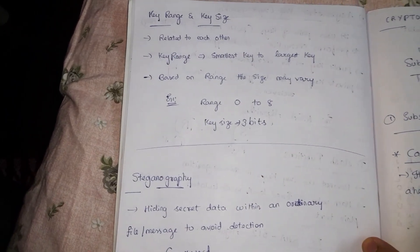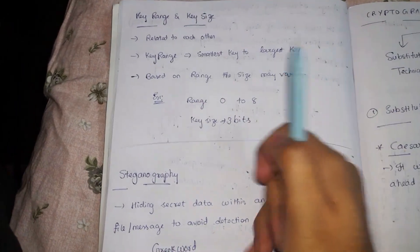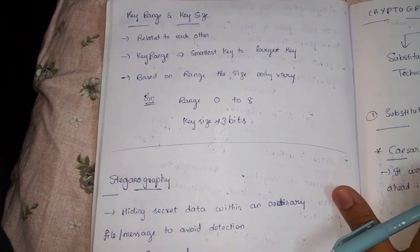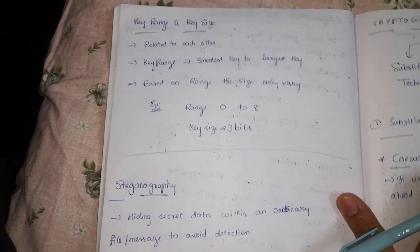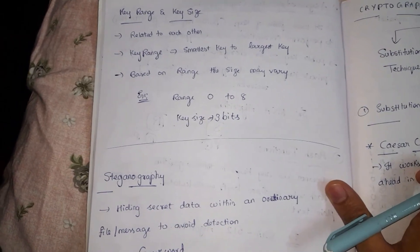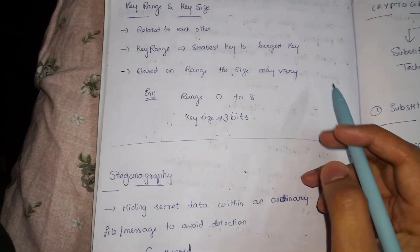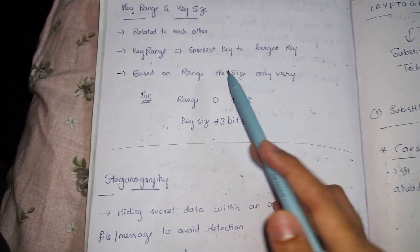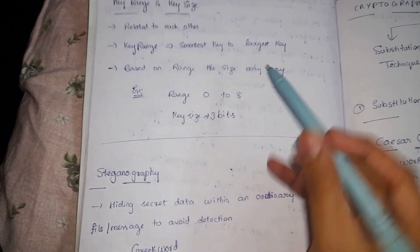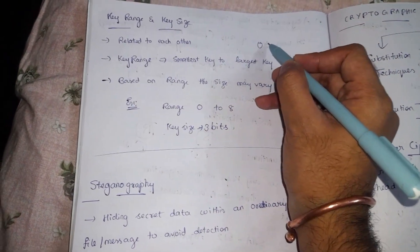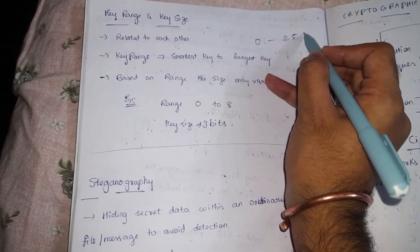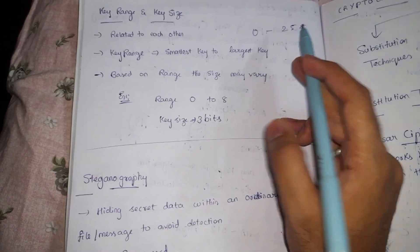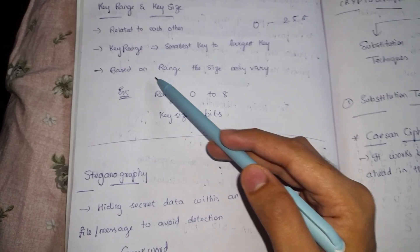There is a concept of key range and key size. In cryptography algorithms we perform encryption and decryption using keys, but how long can the key be and what can be the size of the key? The key range denotes the smallest possible key and the largest possible key. In some cases it can be from as low as zero and as high as 255 or even more, and it sometimes depends on the length of the plain text.